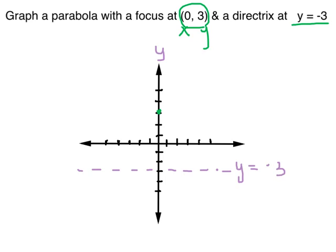Now for the parabola we're going to graph, we have to figure out where to curve it and where its vertex is. It's going to curve towards the focus, and the vertex is exactly in between the focus and the directrix — 3 units from the focus and 3 units from the directrix. So here's the parabola, curving in the direction of the focus, sketched with an arrow to show it goes forever upward.